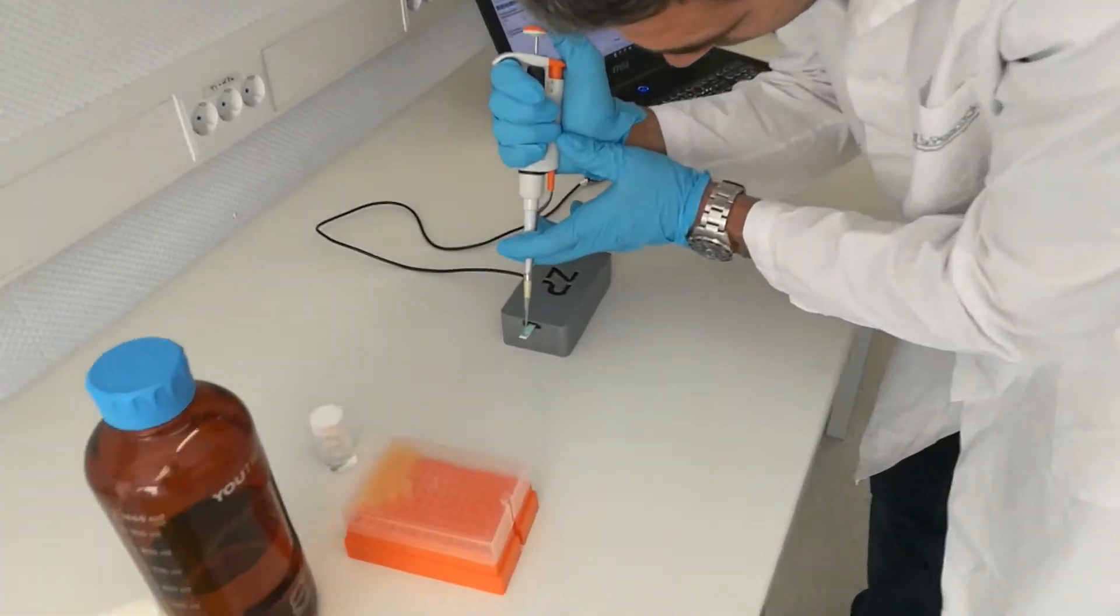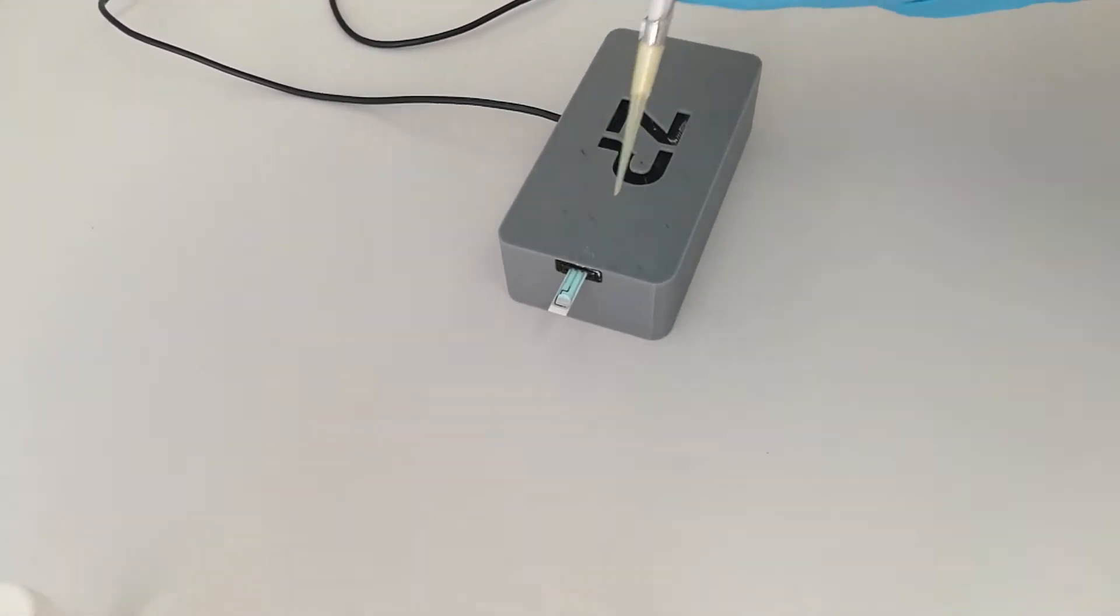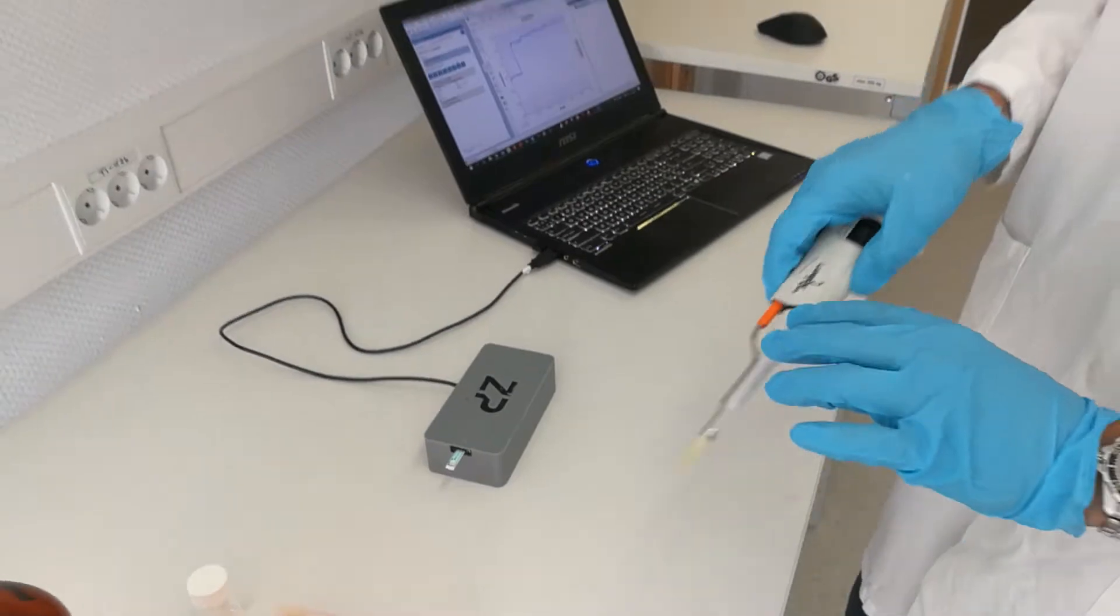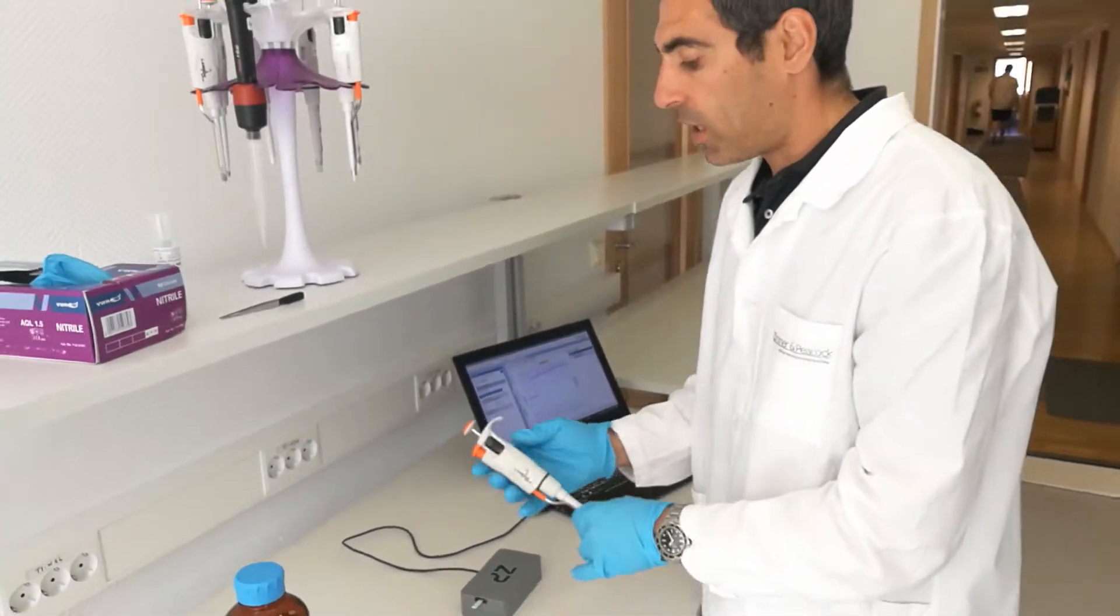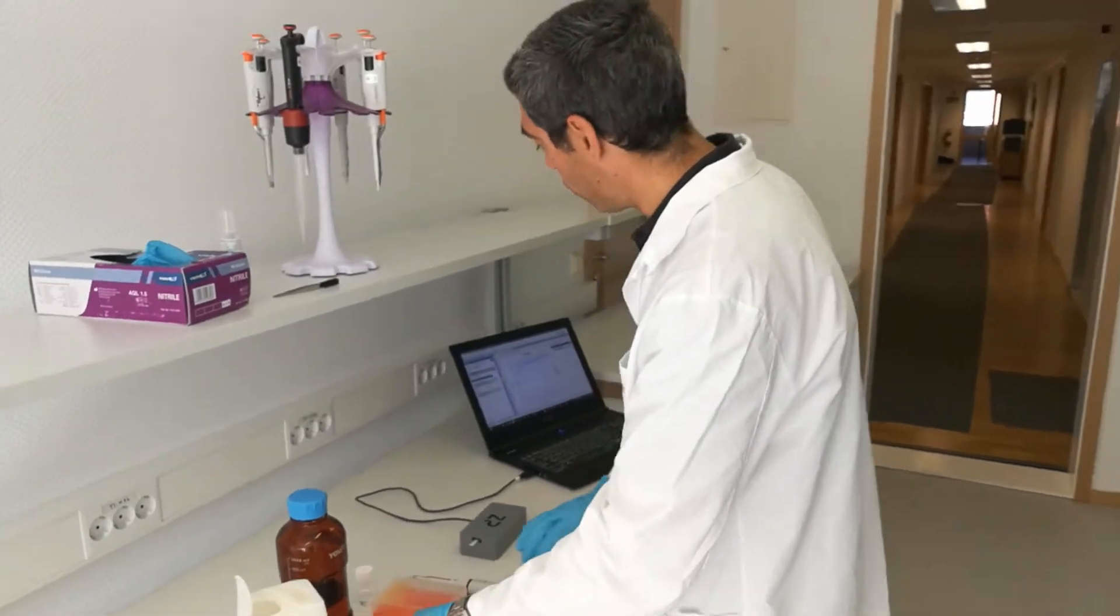It is important to have some chloride in the solution because the reference electrode is made of silver silver chloride. That means you will deplete the electrode if you don't have any chloride in the solution.